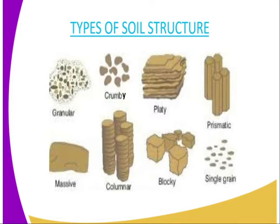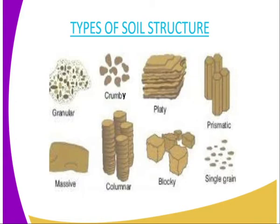The third soil structure is platy, where the soil particles normally lie on top of each other. Then we have the prismatic soil structure. Most of the time it is confused with columnar soil structure. The top of the columnar soil structure is rounded and circular, while the prismatic top is like a polygon — a five-sided figure.